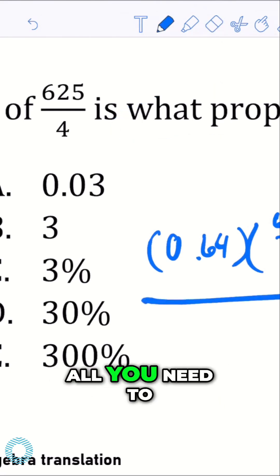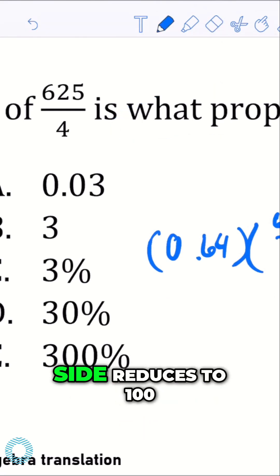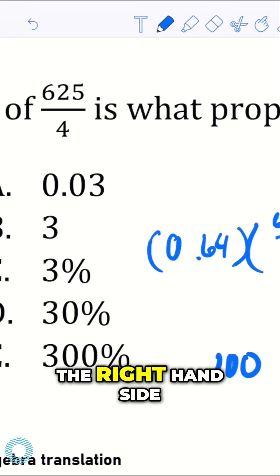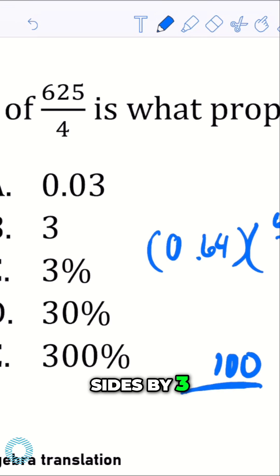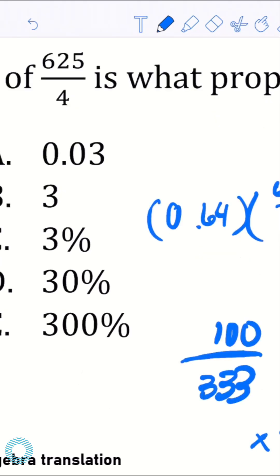After you have it in this form, all you need to do is just simplify it. So the left-hand side reduces to 100, the right-hand side is just the same, 3x. I can divide both sides by 3. x ends up equaling 0.300.